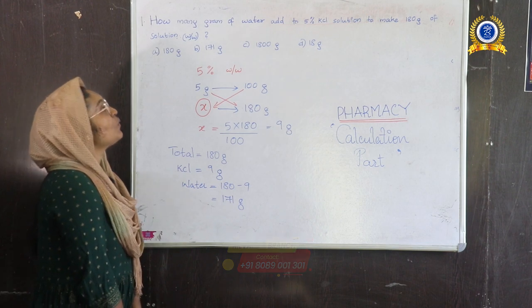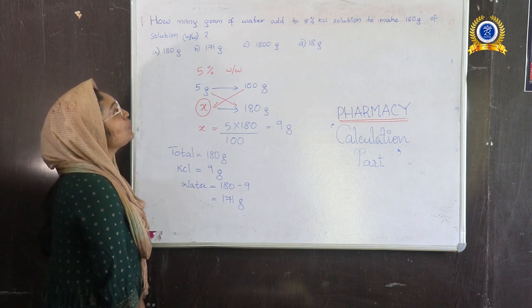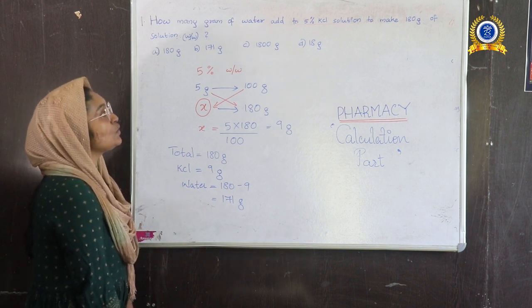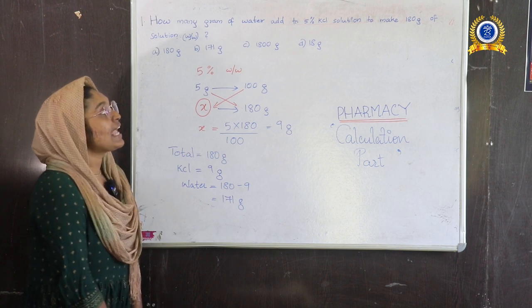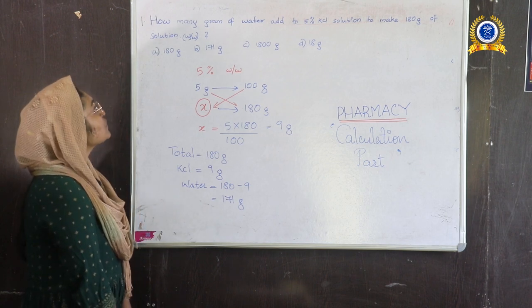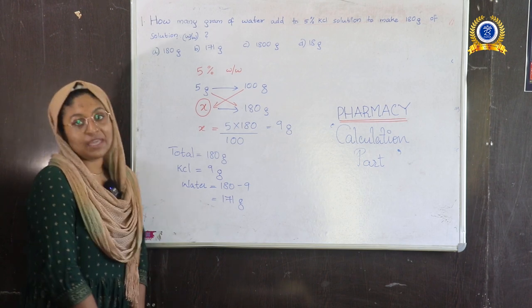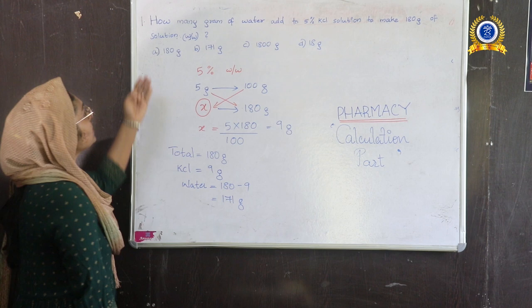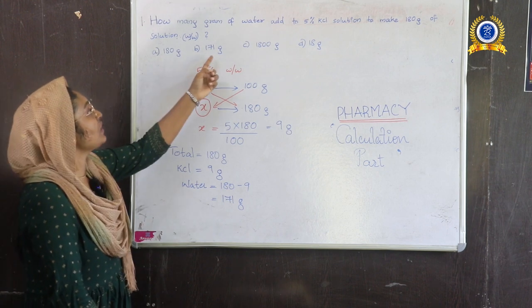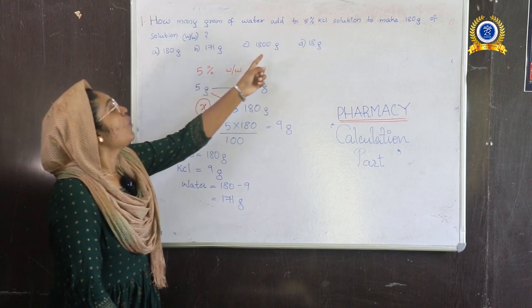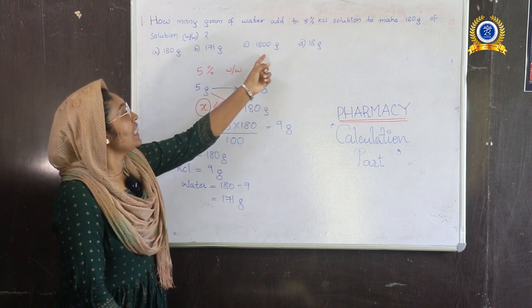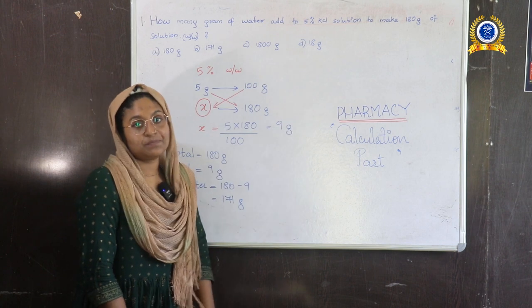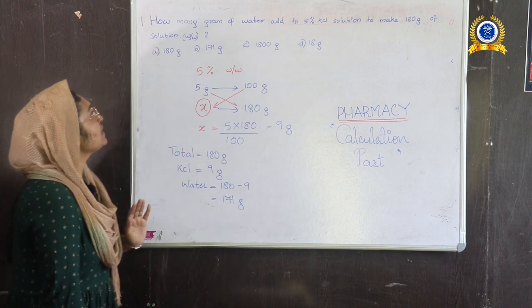How many grams of water are added to a 5% KCl solution to make 180 grams of solution weight by weight? The options are 180 grams, 171 grams, 1800 grams, and 18 grams.